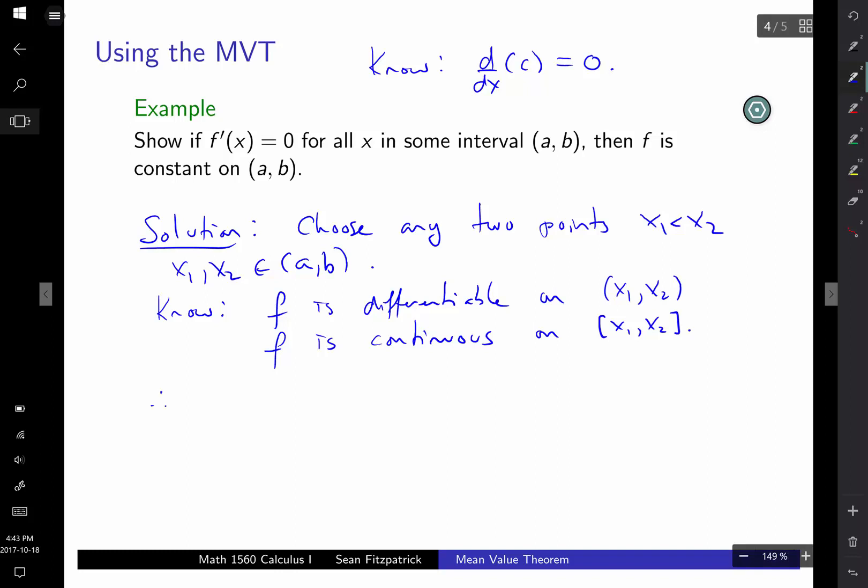So you have the conditions of the mean value theorem are satisfied. And therefore, we know that f(x2) minus f(x1) over x2 minus x1 has to equal f'(c) for some c between x1 and x2. But what do we know about f'(c)? It has to be zero. And that means if I multiply both sides by x2 minus x1, that f(x2) minus f(x1) equals zero.